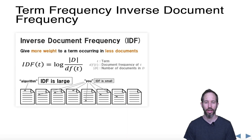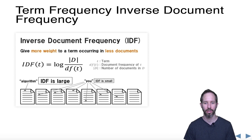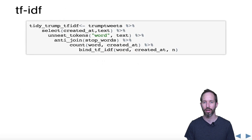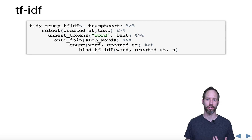One way to get at the unusual words in a corpus — remember, a corpus is just a group of documents — is term frequency inverse document frequency, or TF-IDF. It's the log of the document frequency divided by the number of documents in which a term appears. Essentially, it tells you how unusual a term is between documents.